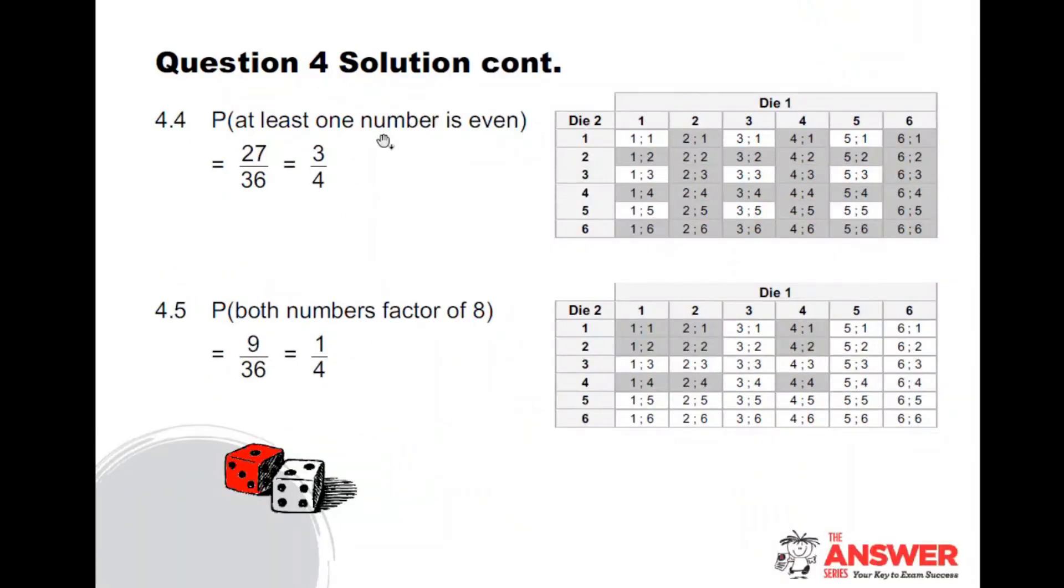At least one number is even. So you can have both numbers even, but one of them at least has to be even. There are an awful lot of them. So you can either do it this way and get 27 out of 36, or you can count which ones have no even numbers and get nine, which means there are 36 out of the 36, there are 27 left, and you get your answer. Both numbers are factors of eight. Your factors of eight are one, two, four, and eight. So I need anything that has both of the numbers being one, two, and four, because of course eight doesn't come into a dice. And there are my options. I get nine out of 36.